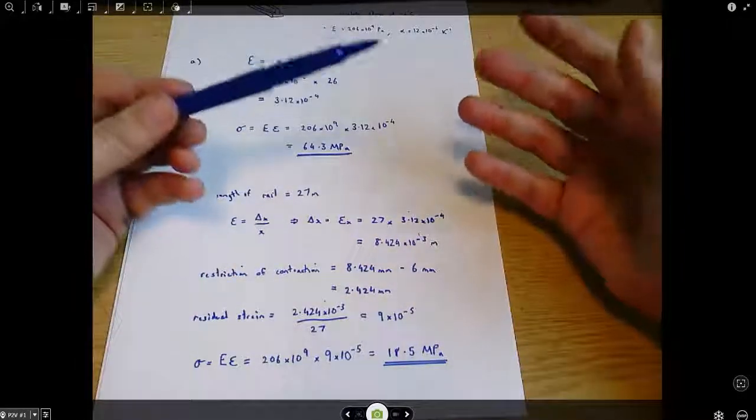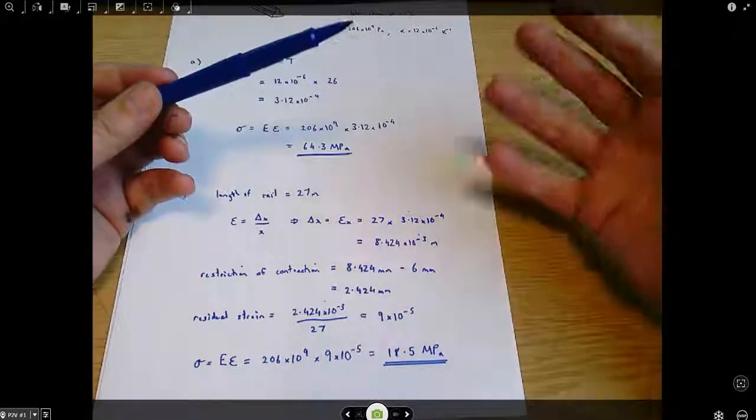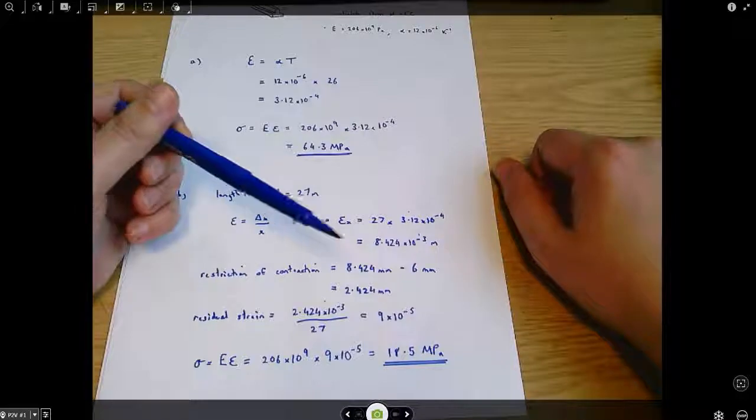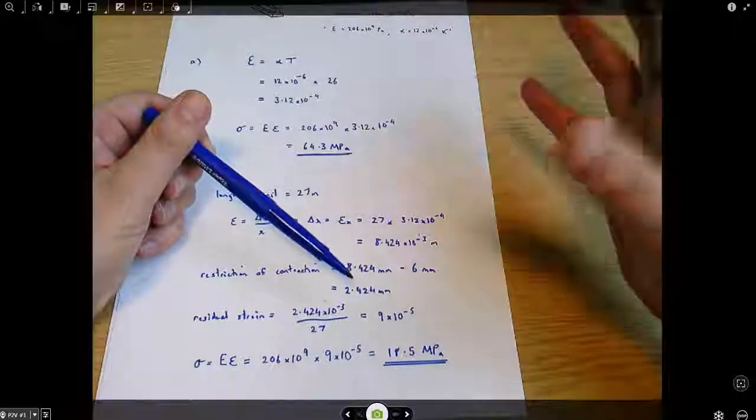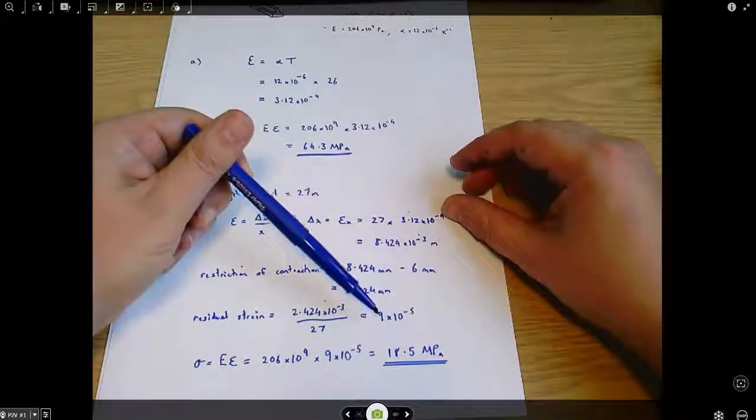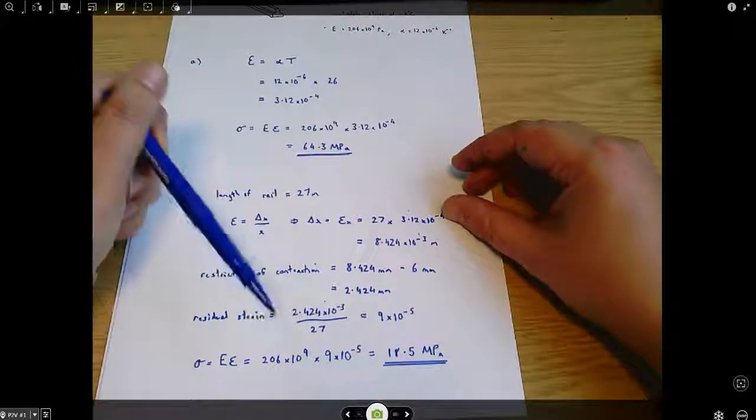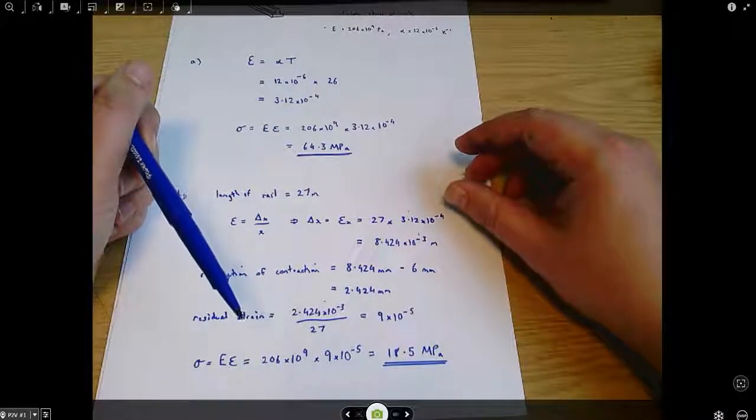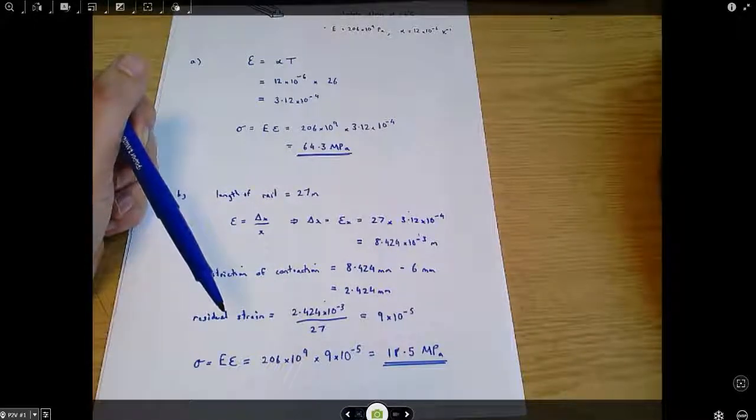And I know I'm using these terms like wants to be a bit vaguely, but sometimes they're the easiest way to think of these things, I think. So, there's 2.4 millimetres left of extension that can't happen, that causes a strain, and in turn that strain causes a stress, just using the same definitions of stress and strain that we've used all the way through this module. And that's how that question on thermal expansion works.